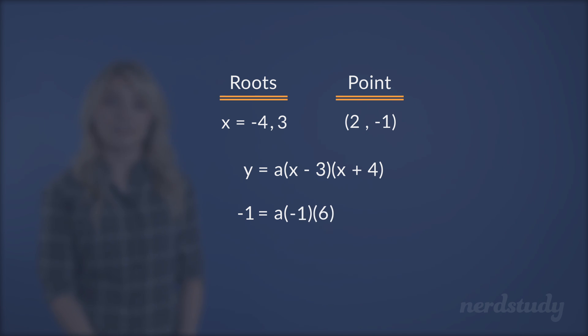Simplifying this gives us this. Now if we divide negative 6 from both sides, we get negative 1 over negative 6 equals to a. Further simplifying gives us a final value of a equals 1 over 6.